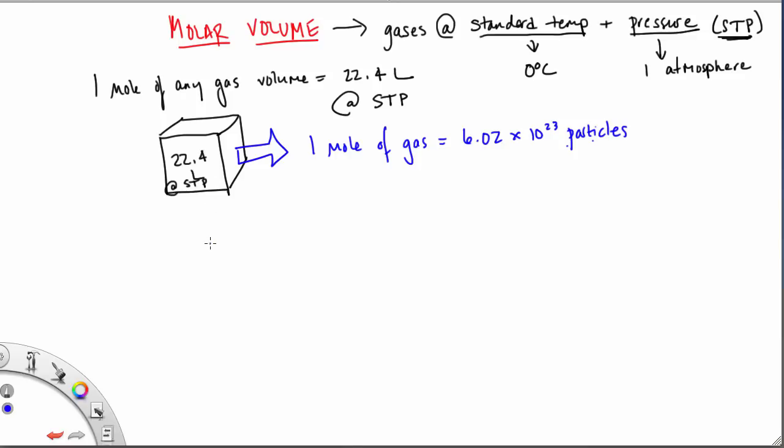We can use this information for conversion factors. Let's say I have 44.8 liters of CO2. How many moles of CO2 is this? We can set up a simple conversion factor using the molar volume of gas. Since we're converting to moles, moles goes on the top. The units we want to cancel out, liters, goes on the bottom. How many liters are in a mole? 22.4. So our problem is 44.8 divided by 22.4, which equals 2.00 moles of CO2.